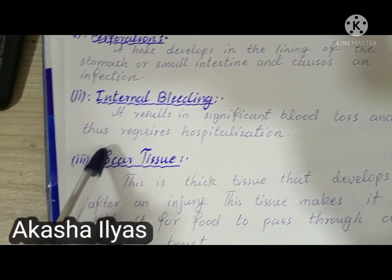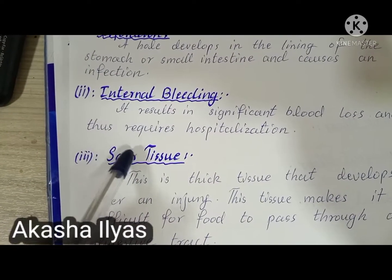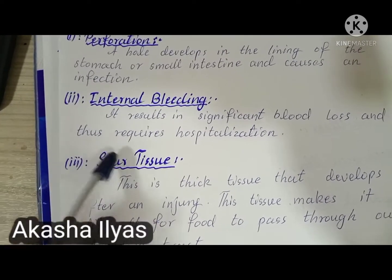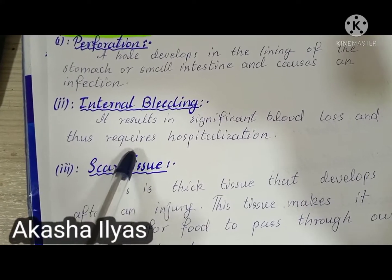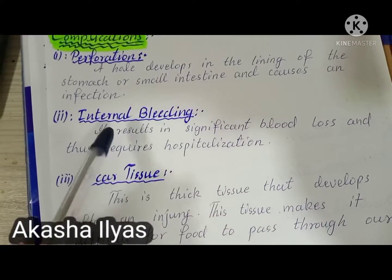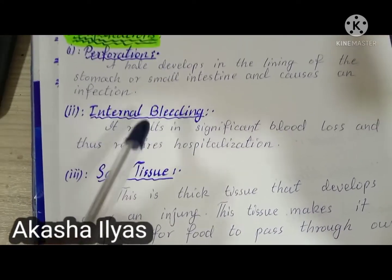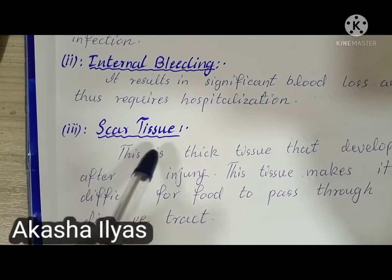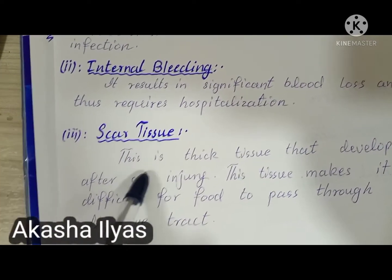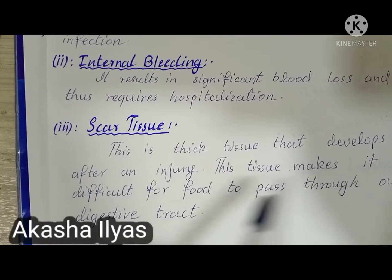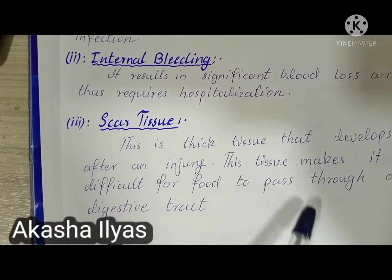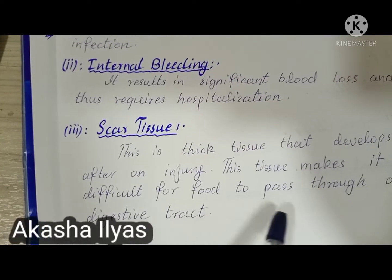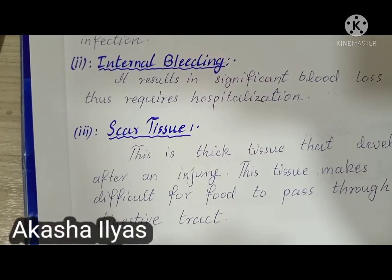Internal bleeding is a very severe complication where blood starts accumulating in the body, requiring hospitalization. The third complication is scar tissue — a thick tissue that develops after an injury, making it difficult for food to pass through the digestive tract.